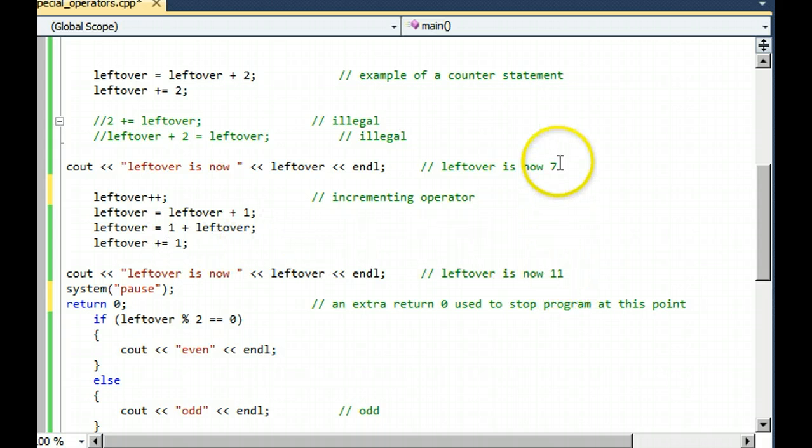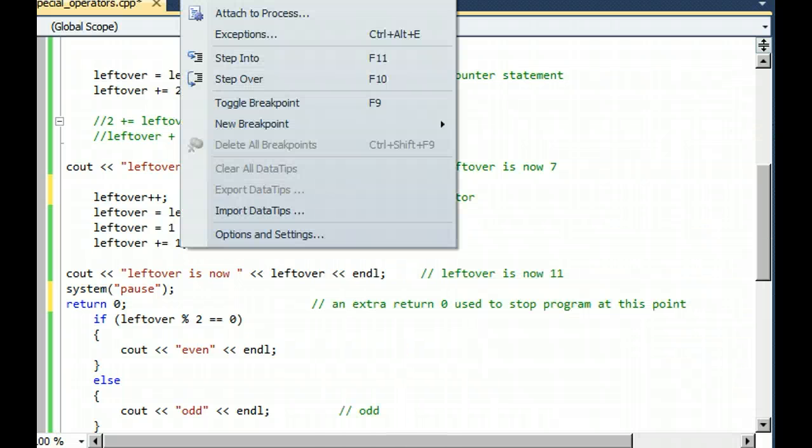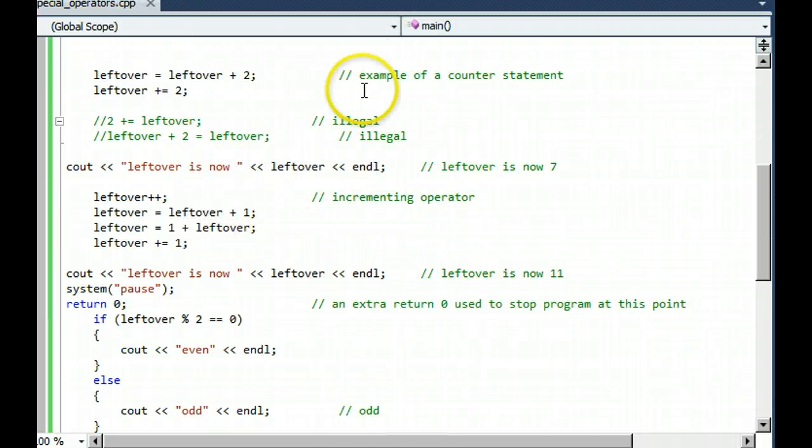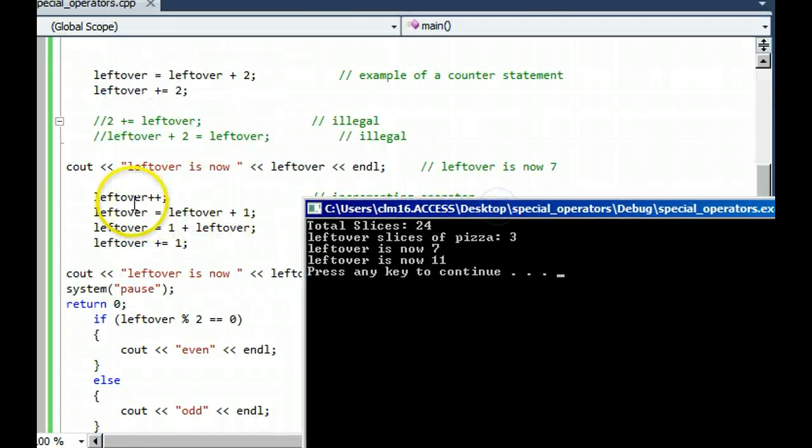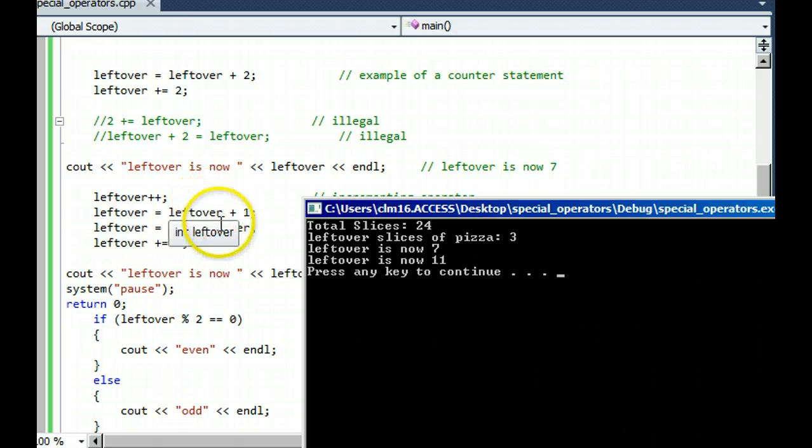Let's execute the program. And leftover is now 11. I'm just showing you four different ways to add one to a variable. Four different assignment statements. I prefer the shortest one that uses the plus plus symbol. But again, you don't lose any points on assignments or on tests or quizzes if you choose to use these other ways of adding one.